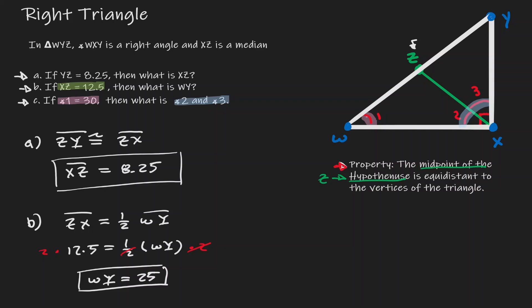If that is the case, then we know that WZ is congruent to ZY which is congruent to ZX. If that is the case, then notice that here we have an isosceles triangle. If that is an isosceles triangle, then angle 1 is going to be congruent to angle 2. Knowing that angle 1 is 30 degrees, therefore angle 2 is 30 degrees as well.